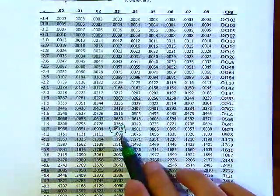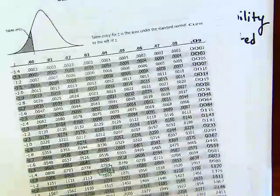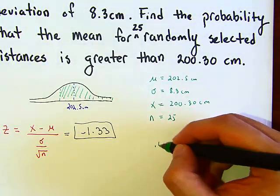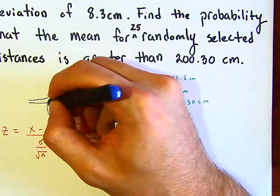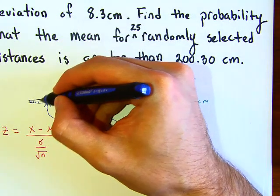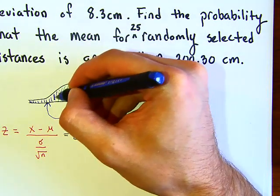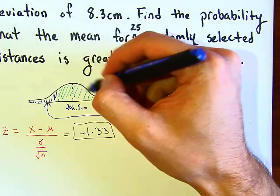So 0.0918. This 0.0918 represents the area to the left. It's this area over here. But we don't want this area in the blue; we want the area in the green because we want to know what's greater than this.